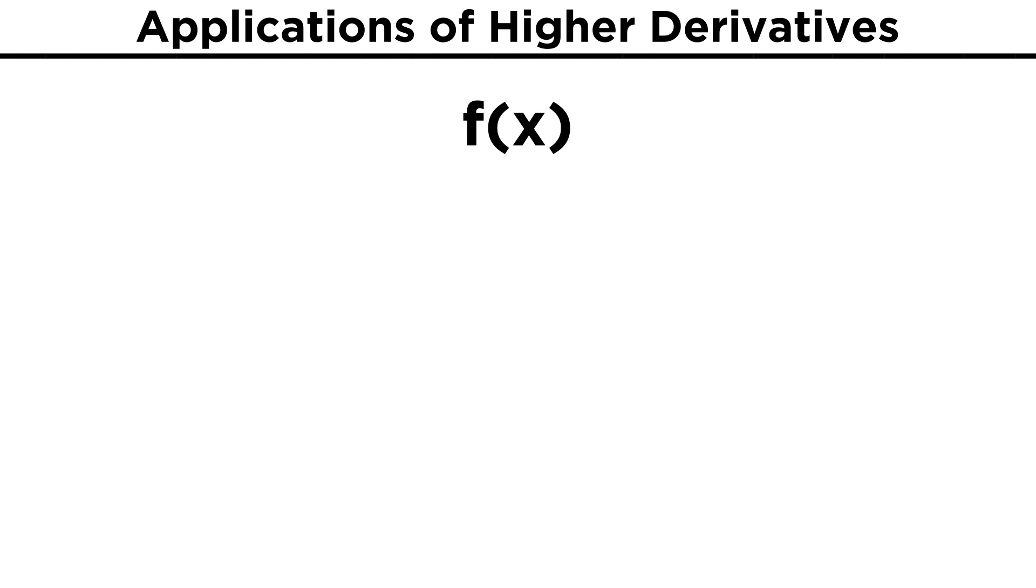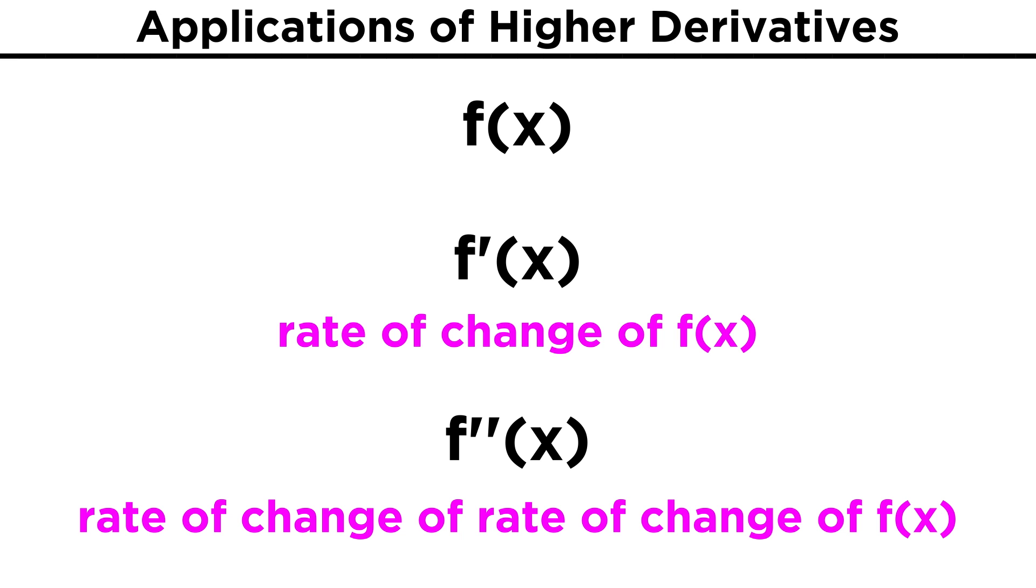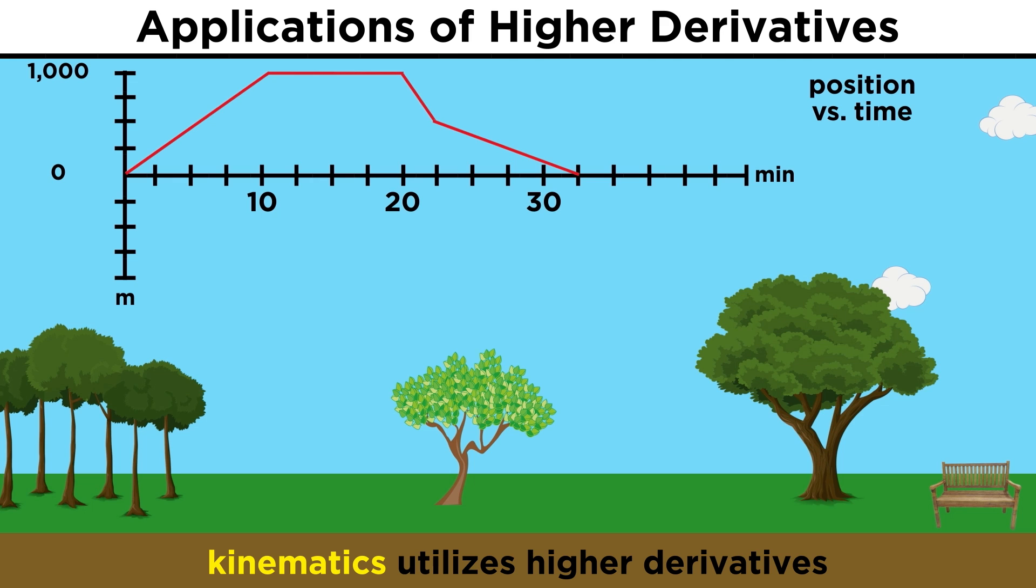So why is this useful? Well, let's recall that a derivative represents the rate of change of a function. This means that a second derivative represents the rate of change of the rate of change of the function. That may sound confusing, but there is an extremely good use for this in kinematics, the study of motion.